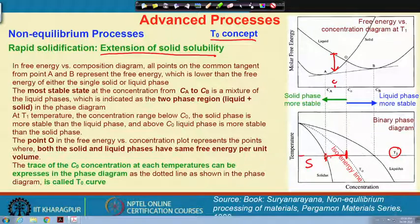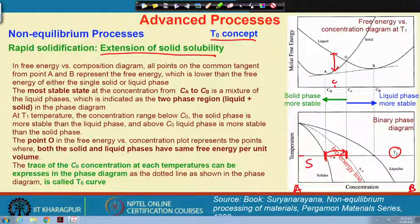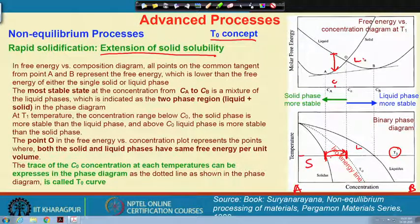Even though at T1 temperature the maximum solubility of the solid phase is up to a certain value, it can be extended up to this composition. This is the fundamental aspect of the T naught curve — to enhance the extension of solid solubility. Beyond this limit, liquid is stable and long-range partitioning of atomic species is required.